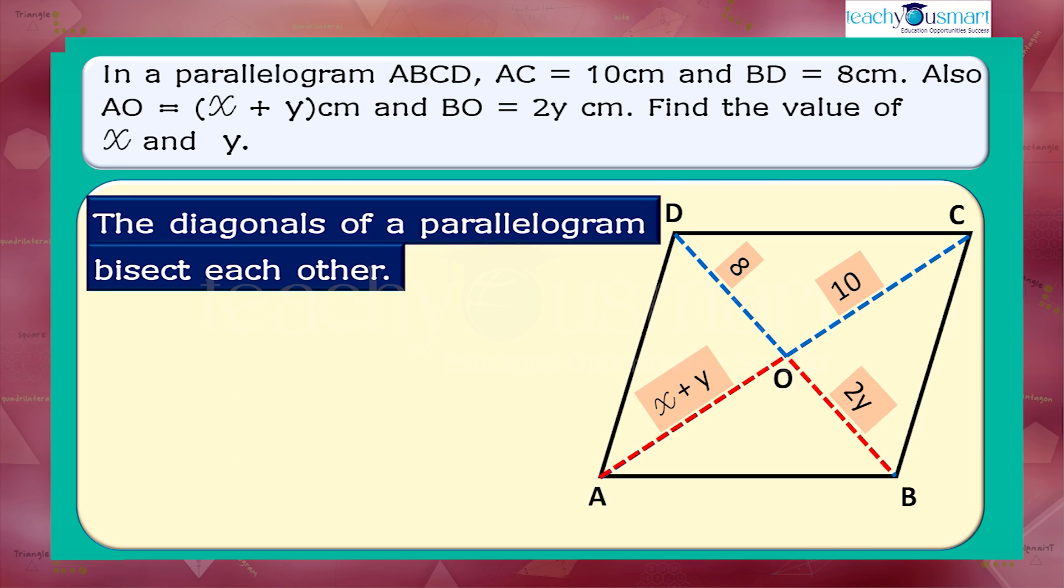Then by the property, we can say that AO equals OC equals 10 by 2 equals 5 cm, and BO equals OD equals 8 by 2 equals 4 cm.